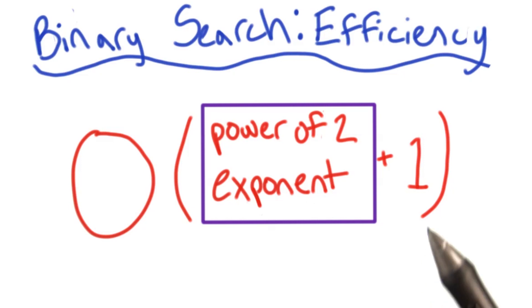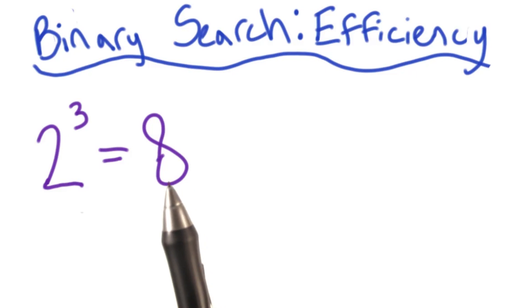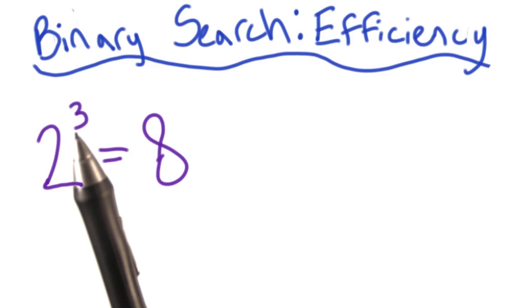How do I get some number or expression that represents this, the power of 2 exponent? So this is what I'm starting with, the number of elements in my array. And I want to end up with this number, the exponent. Well, I remember some weird math that I used to do a long time ago.